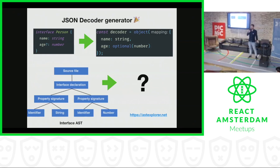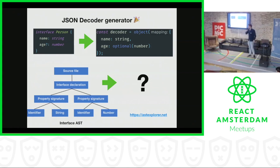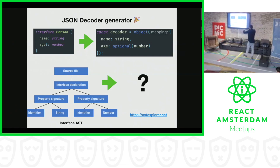We're doing that using the TypeScript Compiler API, which you can use to transform your source code file into an abstract syntax tree. An abstract syntax tree is a node structure which represents the content of your file. The tree shown represents the interface — it has a source file, which has an interface declaration with two properties: name of type string and age of type number.